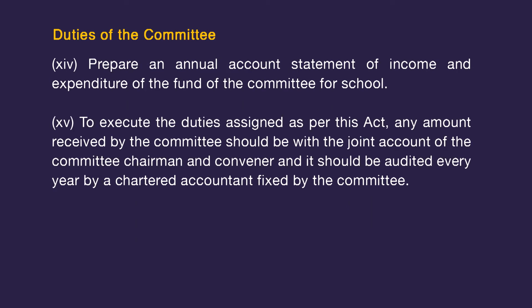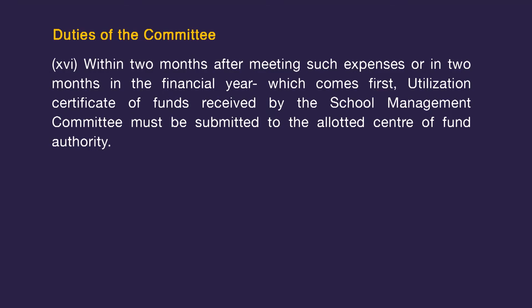The committee should prepare an annual account statement of income and expenditure. Any amount received by the committee should be held in a joint account of the committee chairman and convener, and it should be audited every year by a chartered accountant fixed by the committee. In the annual meeting, the audit report along with the accounts should be produced. It should be countersigned by the committee chairman and convener and submitted to the assistant educational officer within a month.